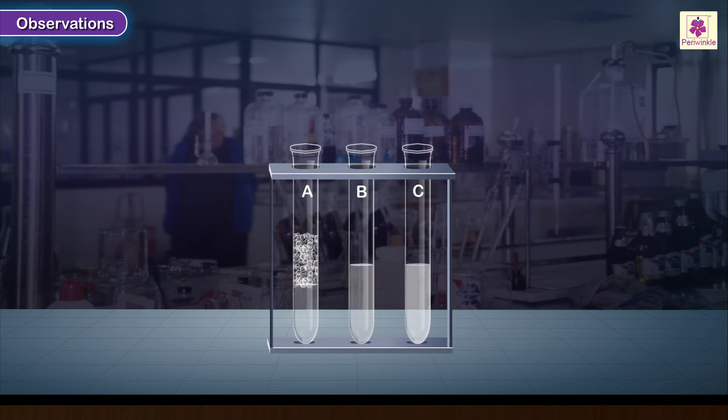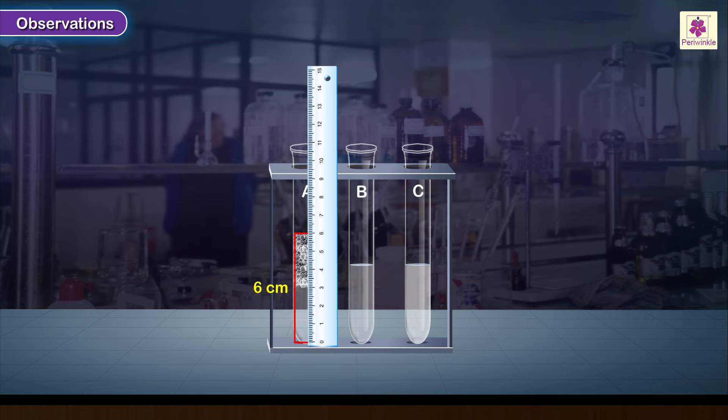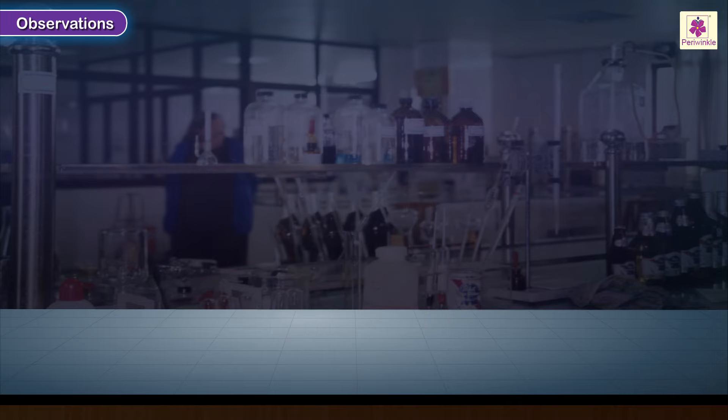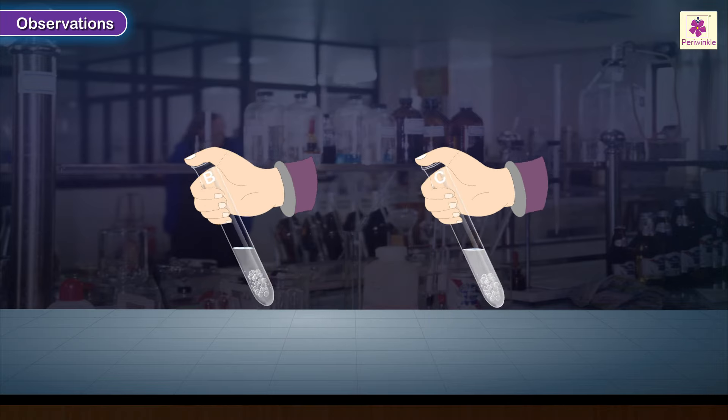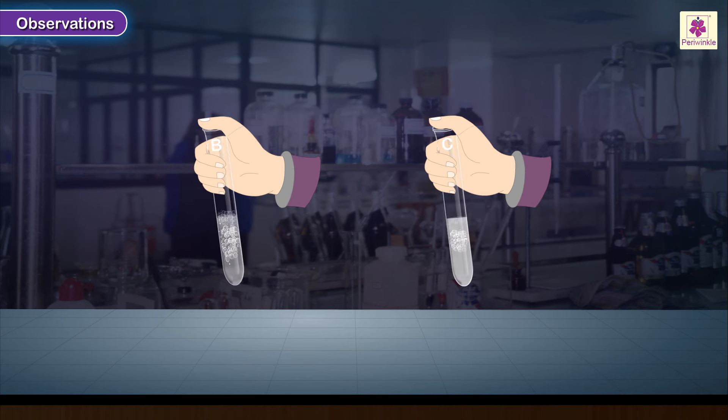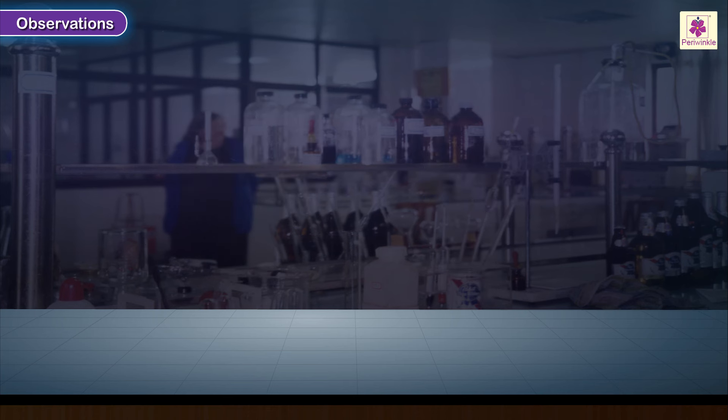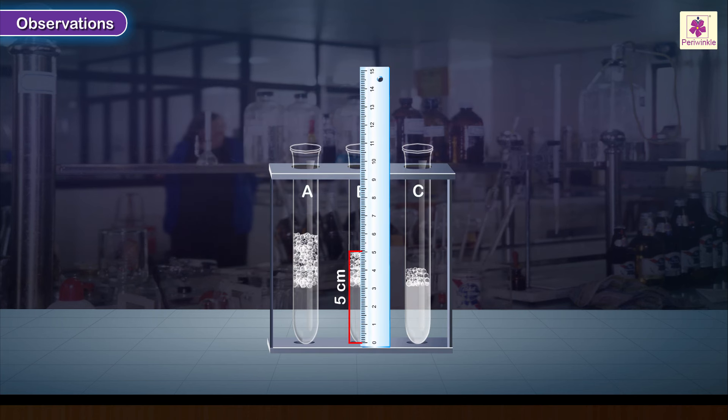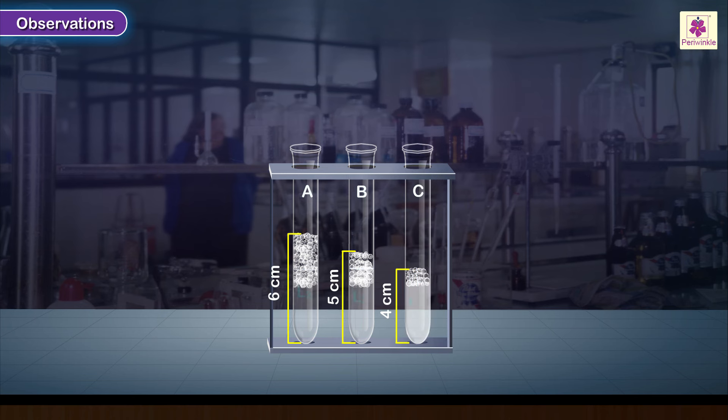Measure the length of soap solution with foam formed in the test tube immediately with a measuring scale. Repeat the earlier steps. Record this as final length L2 for all the 3 solutions.